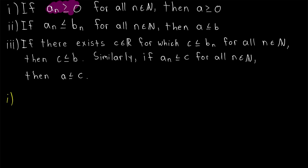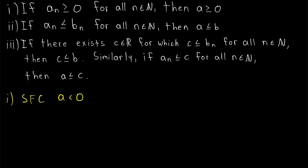We assume that every term of our convergent sequence is at least zero, and we want to prove that its limit a is also at least zero. So we'll suppose for contradiction that the limit a is in fact less than zero. The idea is pretty straightforward: since the sequence a_n gets arbitrarily close to its limit a, if a is negative, then surely we can find a negative term of our sequence, which will be a contradiction because we assumed every term was non-negative, greater than or equal to zero.